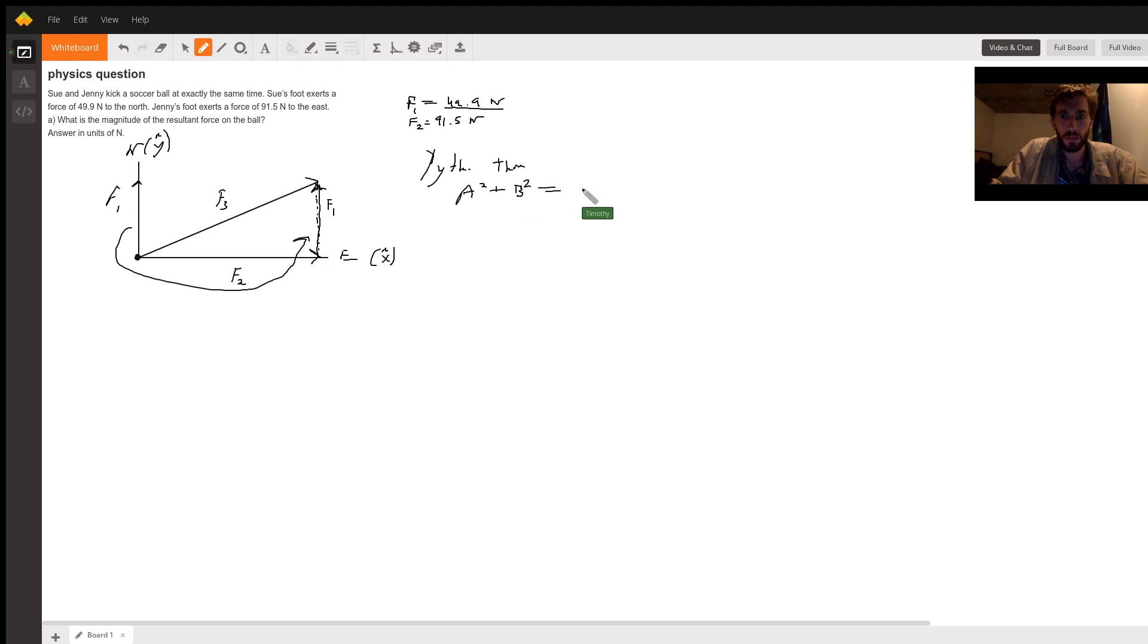is equal to c squared. All it really is is the distance formula. You can basically say c is equal to the resultant force. So if you say that, you're basically saying F3 is going to be equal to the square root of F1 squared plus F2 squared. Does that make sense?